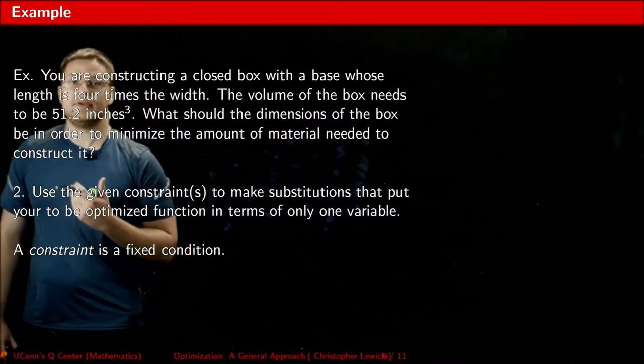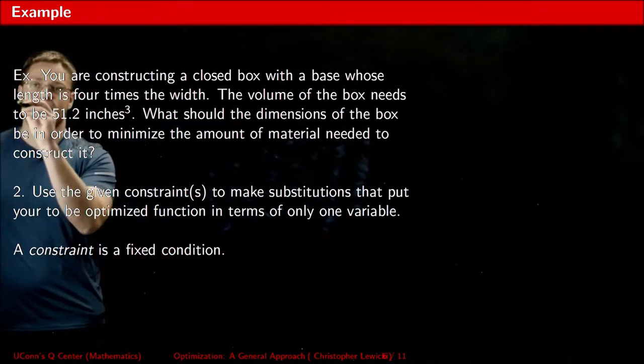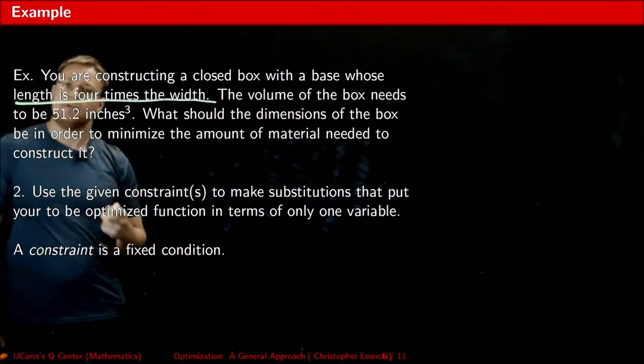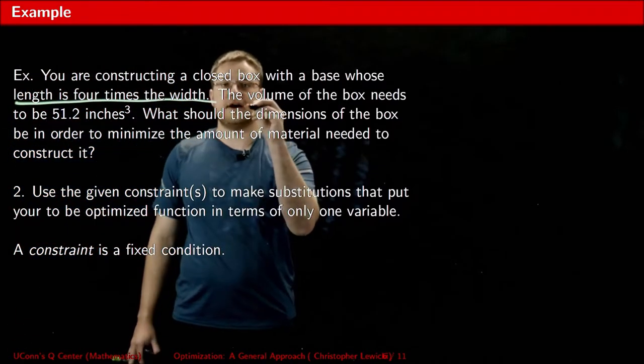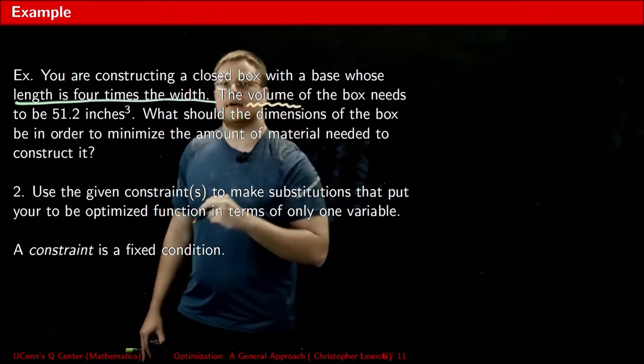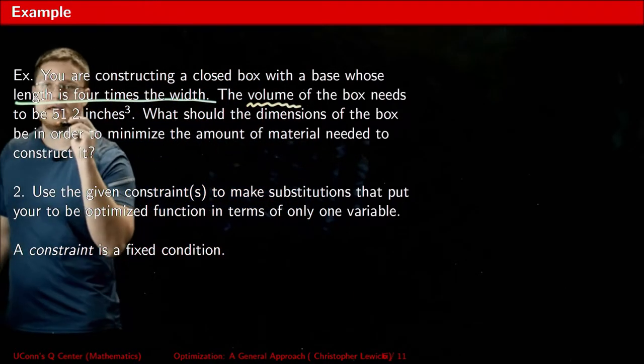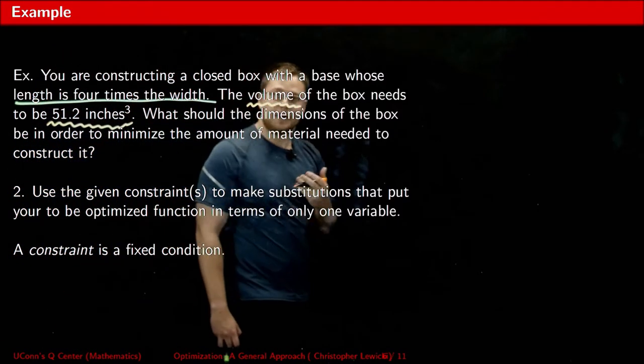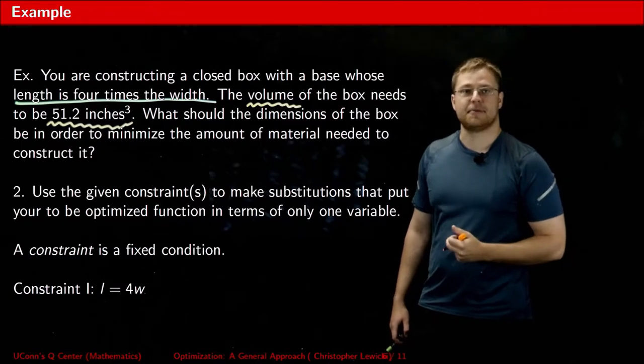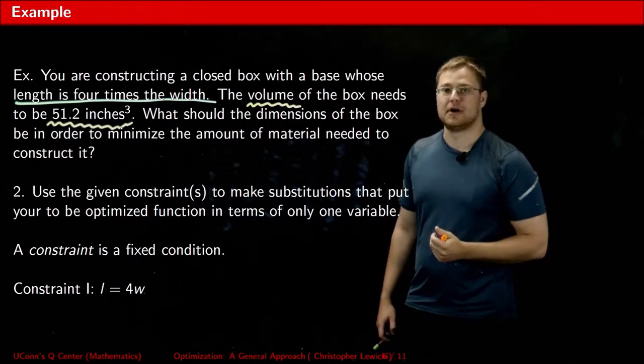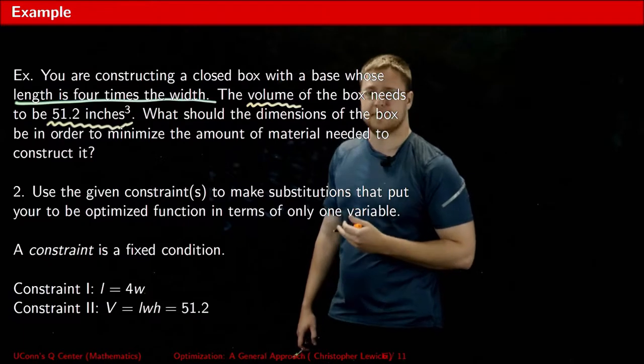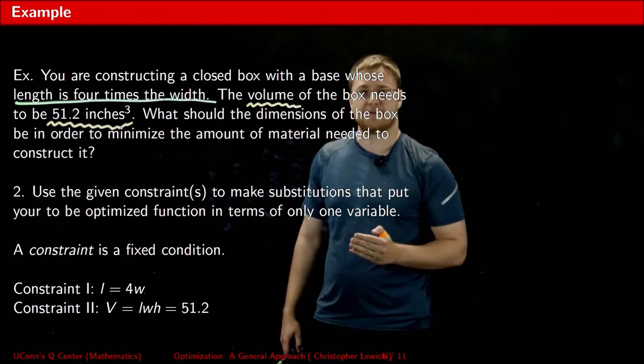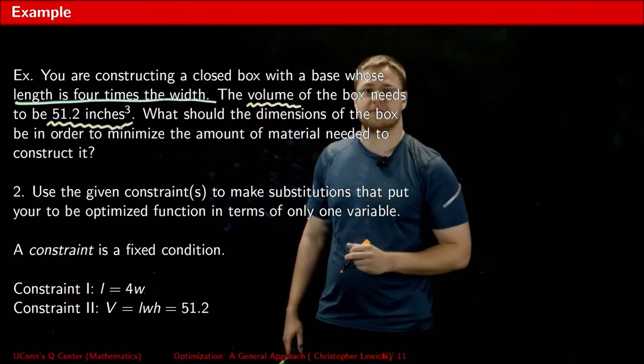Well reading through this, I see that one thing that has to be true is that the length is four times the width. It also has to be true that the volume of our box has to be 51.2 inches cubed. At this point, I'm going to translate English into math by writing equations for both of my constraints. Equation one is that the length is equal to four times the width, and constraint two is that V, the volume, is equal to the length times the width times the height, which has to be equal to 51.2.